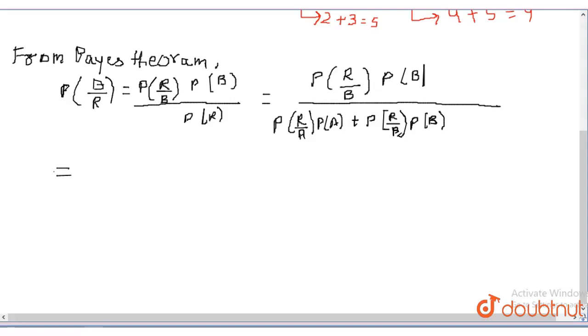Which is equals to 5 upon 9 product 1 upon 2, product 1 upon 2.